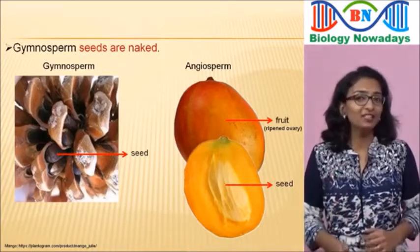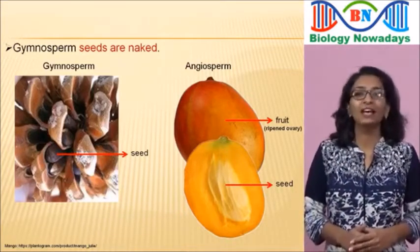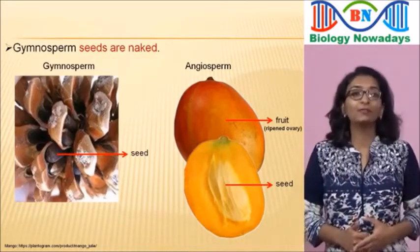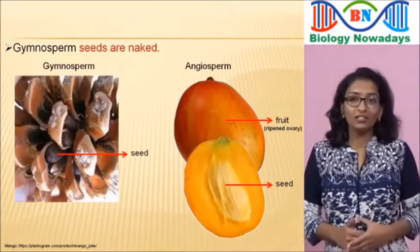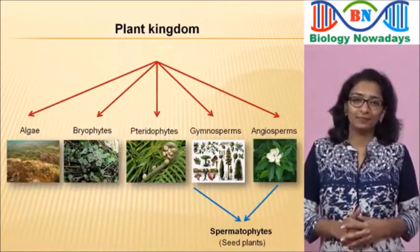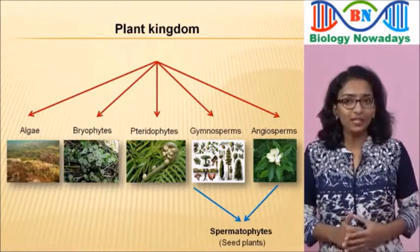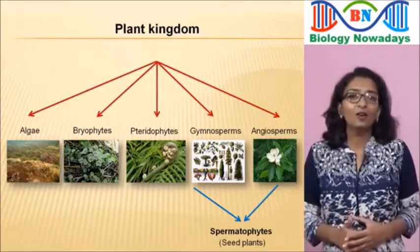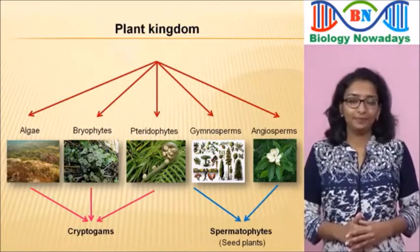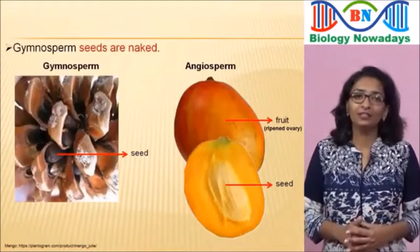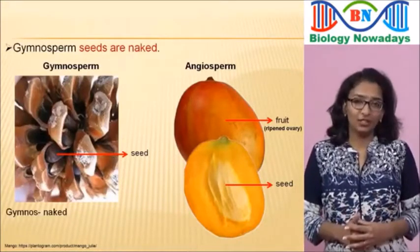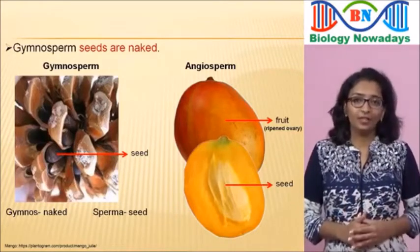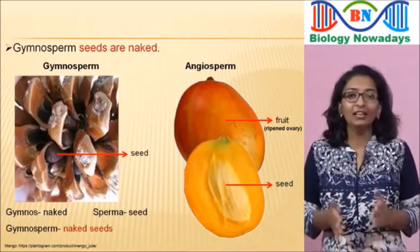This feature is one of the main differences between gymnosperms and angiosperms. Since both gymnosperms and angiosperms form seeds, they are called spermatophytes or seed plants. The other plant groups — algae, bryophytes and pteridophytes — which don't form seeds are called cryptogams. The name gymnosperm is derived from the Greek words gymnos meaning naked and sperma meaning seed. So gymnosperm means naked seeds.